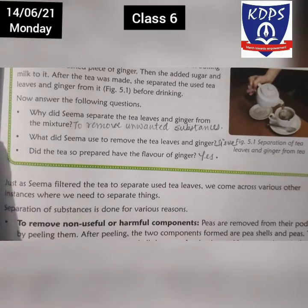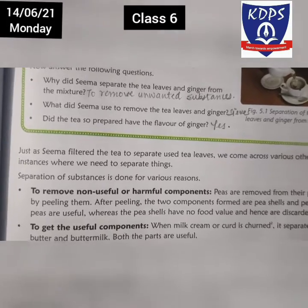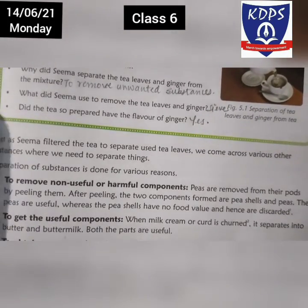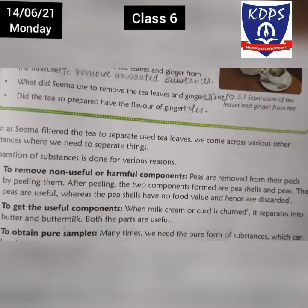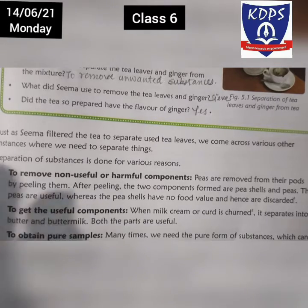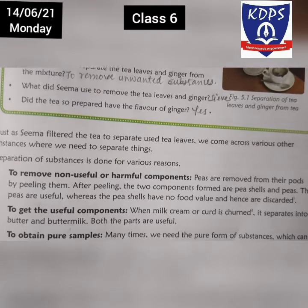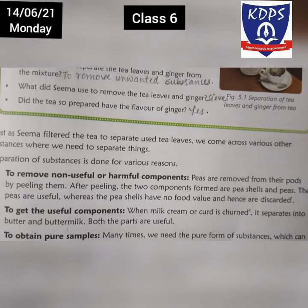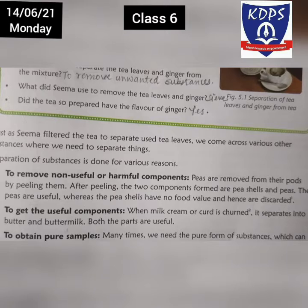So the first reason is to remove non-useful or harmful components. Peas are removed from their pods by peeling them. After peeling, the two components formed are pea shells and peas. The peas are useful whereas the pea shells have no food value and hence are discarded.